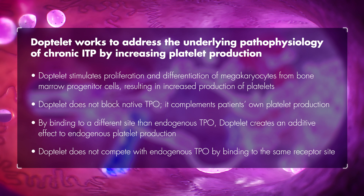DopTelit stimulates proliferation and differentiation of megakaryocytes from bone marrow progenitor cells resulting in increased production of platelets. DopTelit does not block native TPO — it complements patients' own platelet production. By binding to a different site than endogenous TPO, DopTelit creates an additive effect to endogenous platelet production. DopTelit does not compete with endogenous TPO by binding to the same receptor site.